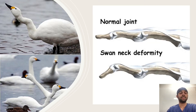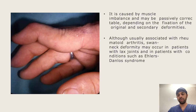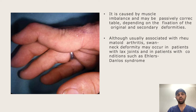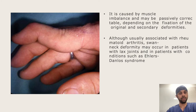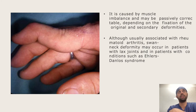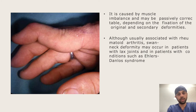What is the cause of swan neck deformity? It is usually caused by muscle imbalance and may be passively correctable, depending on the fixation of the original and secondary deformities. The word 'fixation' is very important in swan neck deformity, which I'll go into in detail. It usually occurs in rheumatoid arthritis, but can also occur in patients with genetic conditions such as Ehlers-Danlos syndrome.